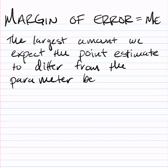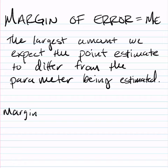So the margin of error is going to measure how much we expect those x bar values to differ from mu that's being estimated, or p hat to differ from p, the population proportion.